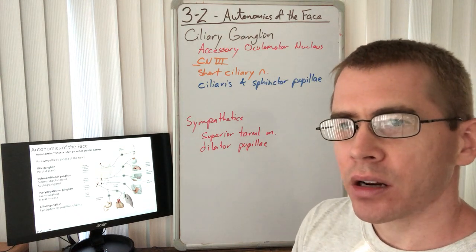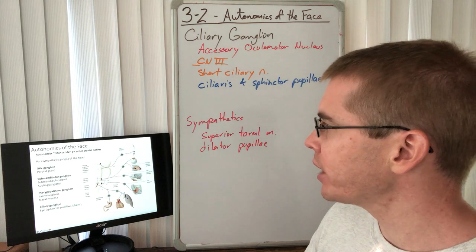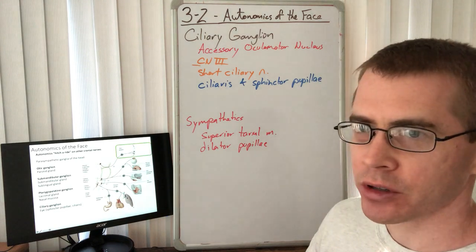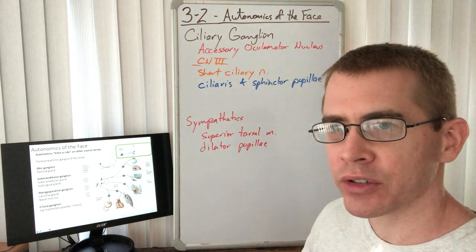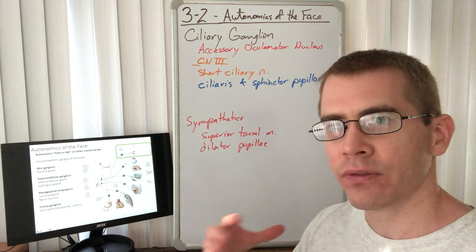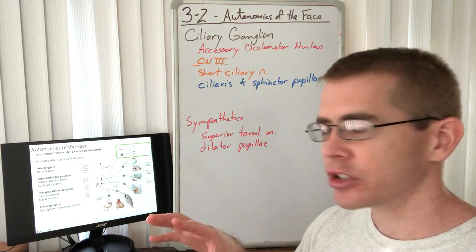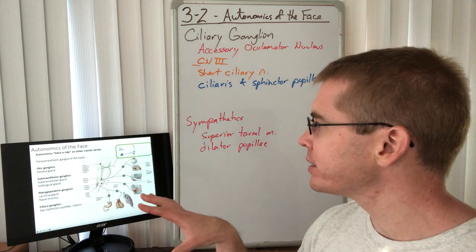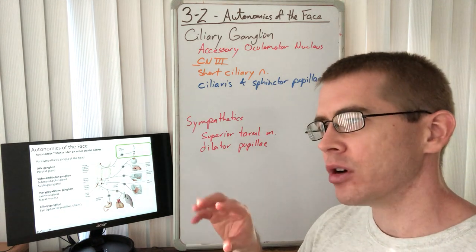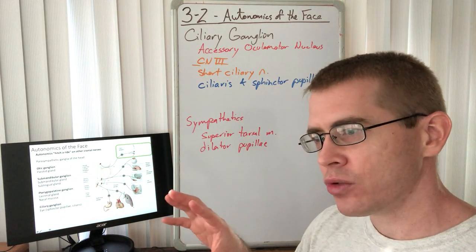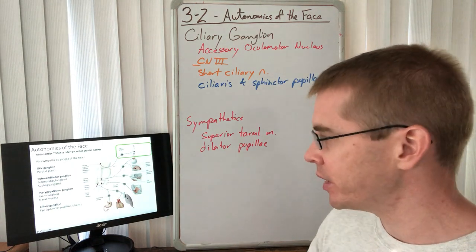Let's talk about the autonomics of the orbit. We've already talked about the pterygopalatine, submandibular, and otic ganglia. Now let's talk about the ciliary ganglion and what its function is. You'd think its function involves the lacrimal gland, but we already understand that the lacrimal gland is supplied by the pterygopalatine ganglion — so the lacrimal gland is not a function of the ciliary ganglion.